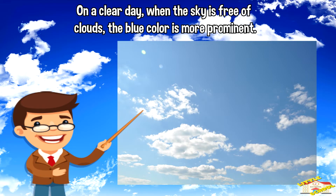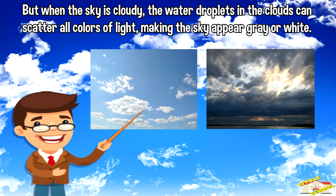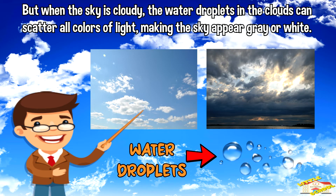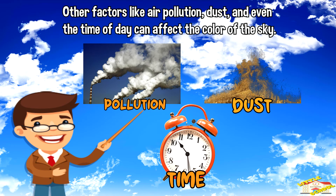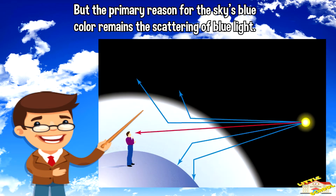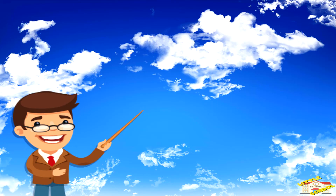On a clear day when the sky is free of clouds, the blue color is more prominent. But when the sky is cloudy, the water droplets in the clouds can scatter all colors of light, making the sky appear gray or white. Other factors like air pollution, dust, and even the time of day can affect the color of the sky, but the primary reason for the sky's blue color remains the scattering of blue light.